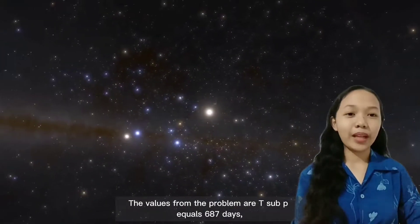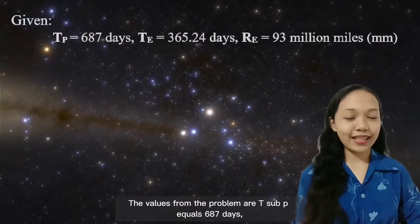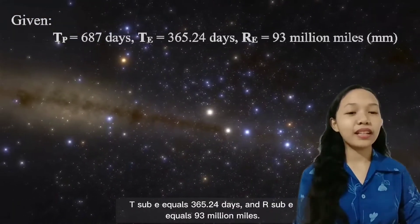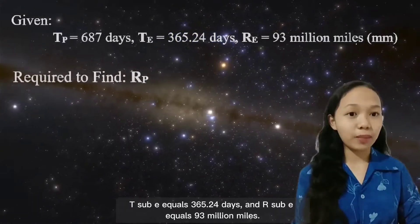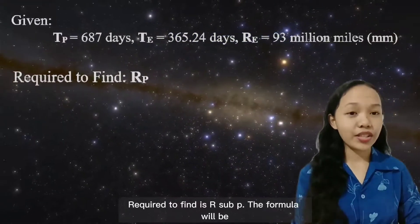The values from the problem are T sub P equals 687 days, T sub E equals 365.24 days, and R sub E equals 93 million miles. The point to find is R sub P.